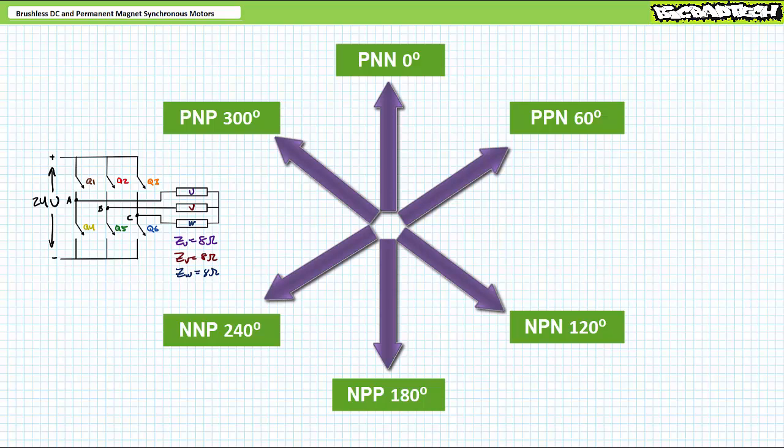Even more features of field-oriented control and space vector modulation await your discovery. In addition to orientation, we can also modulate the modulations, if you will, to produce differing magnitude field strengths at different spatial locations. What if you wanted a reduced field midway between NPN and NPP? You could apply NPP for 33% of the time, NPN for 33% of the time, and nothing for 33% of the time.